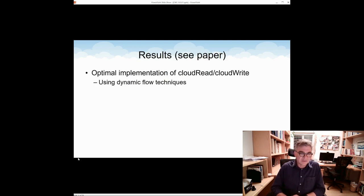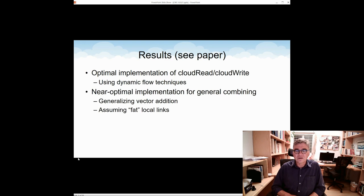So these are the problems we consider in the paper and we give results. For the first basic problems of uploading and downloading files or cloud read and cloud write, we give optimal implementation based on dynamic flow techniques. This is quite a simple adaptation. Our main results concern combining. We give algorithms for general combining with general associative binary operator and general topology, but not for general bandwidths. We give the solution for the model of fat links. Namely, we assume that links connecting processors to processors have practically unbounded bandwidth. But in this case, we find, we give an algorithm which is nearly optimal.